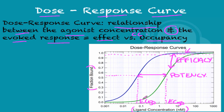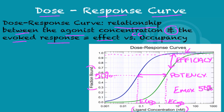The EC50 is shown here — at 50% of saturation, or ligand concentration, you have the effective agonist concentration. This is the concentration needed to produce 50% of the maximum effect, so that's when Emax is at 50%.